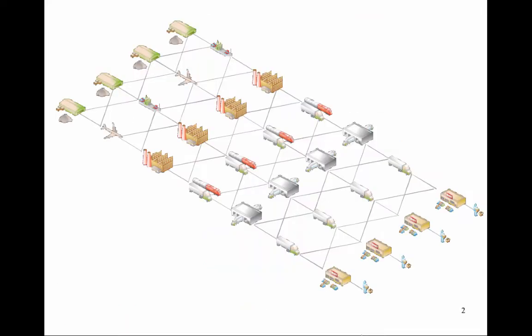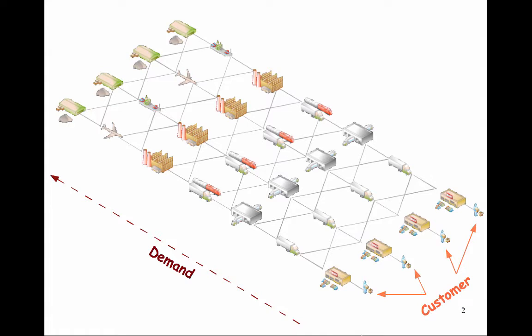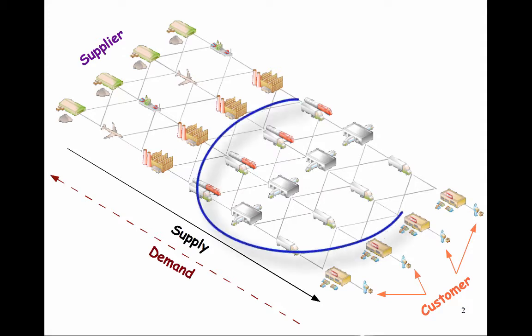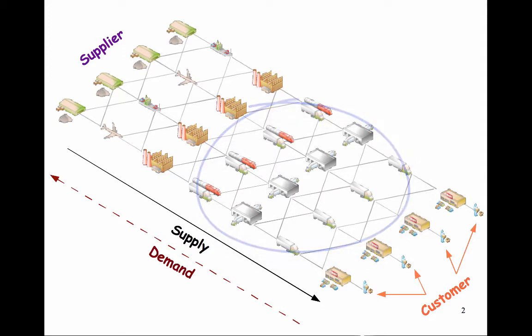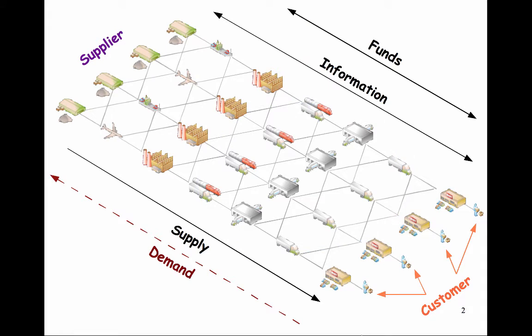As a quick review, based on the customer demand signal, a supply chain consists of the flow of supply — which are materials, products, and services — connected by transportation, storage, and delivery activities, integrated through planning, information, and enabling technologies.